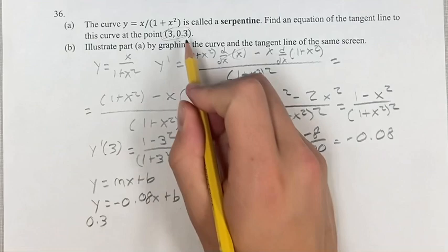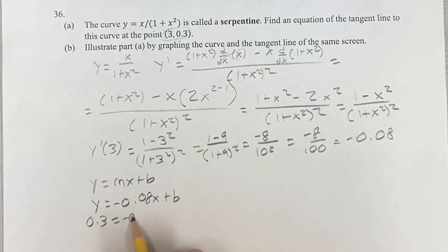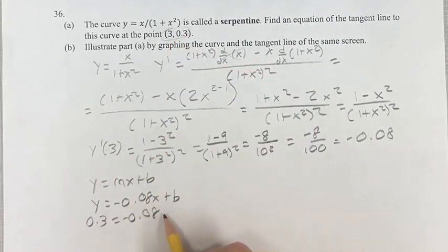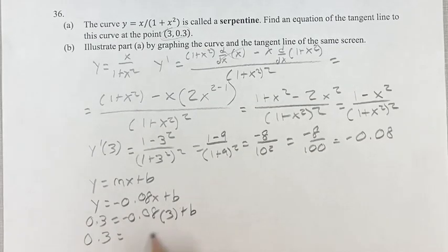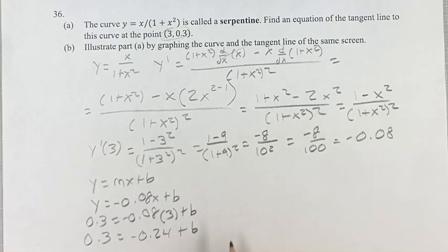So, 0.3 plugging in for y equals negative 0.08, plugging in 3 for x, plus b. We get 0.3 equals, doing the multiplication, negative 0.24 plus b.